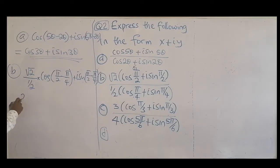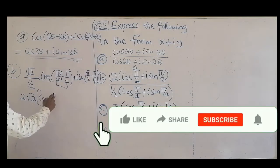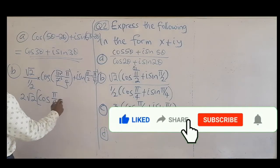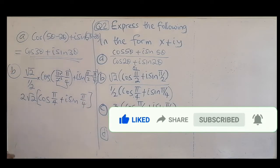And this one will give us 2 root 2. And then we have cos, let's do this. So this one times 2, this one times 2. So 2 pi minus pi, so that's pi over 4. Then plus i sine pi over 4.